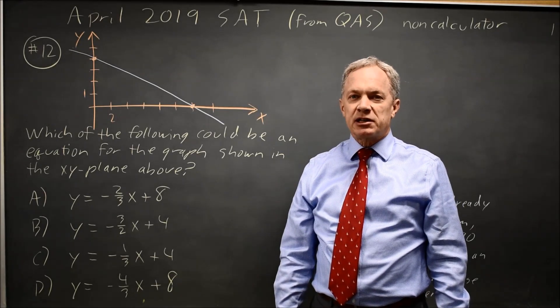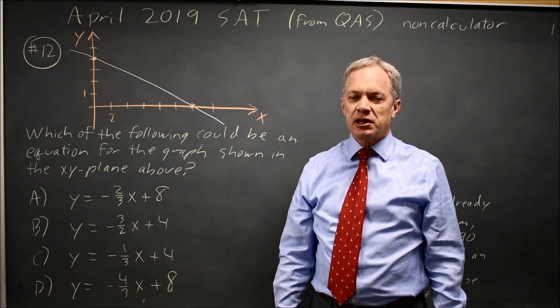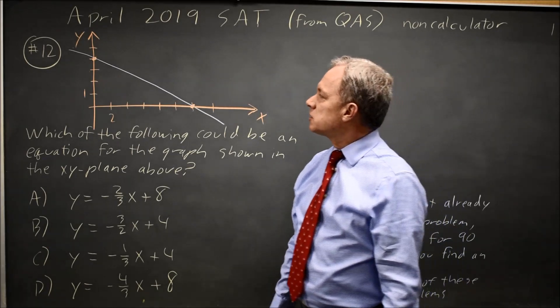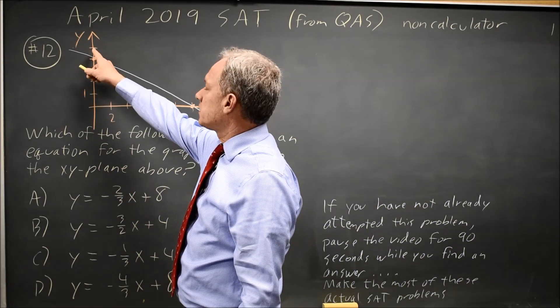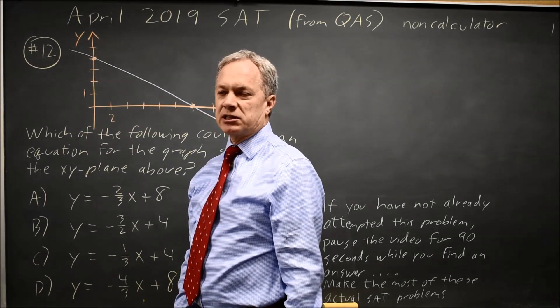College board claims they don't ask trick questions, but they do ask subtle questions that turn on the labels for a graph. So in this case, you'll notice each tick mark on the y-axis is one unit, but your tick marks on the x-axis are two units.